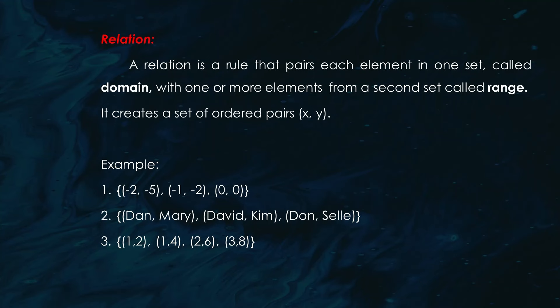First things first, let's talk about relations. A relation is simply a rule that pairs each element in one set, called the domain, with one or more elements from a second set, called the range. Think of it as creating a set of ordered pairs. For example, if we have a set of students and their scores, the relation might pair each student with their respective score.